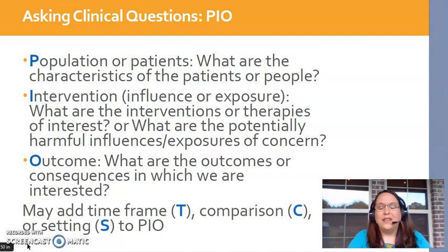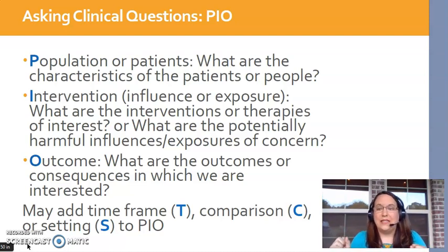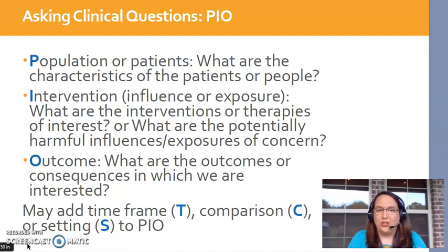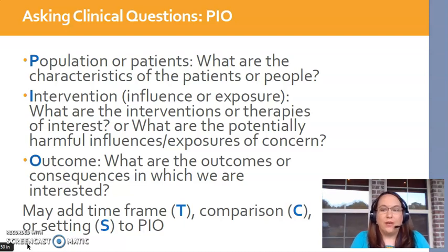The P is for population — basically what kinds of people are we interested in learning more about. You can be very specific or very general. General would be like pediatrics, but that's broad. Are we talking about school-age children, adolescents, or infants? You sometimes need to be more specific. It could also be inpatients, post-operative patients, or nurses like night shift, critical care, or novice nurses. In this class, preferably pick something clinical about patients, because we want to look at patient outcomes.